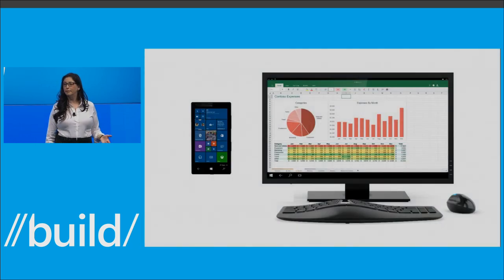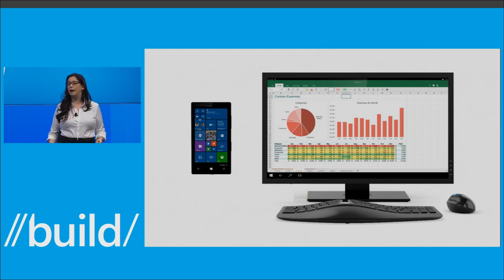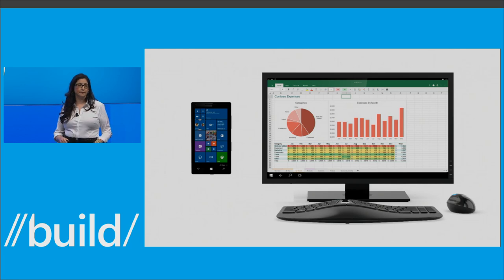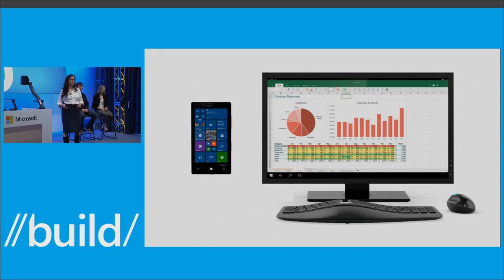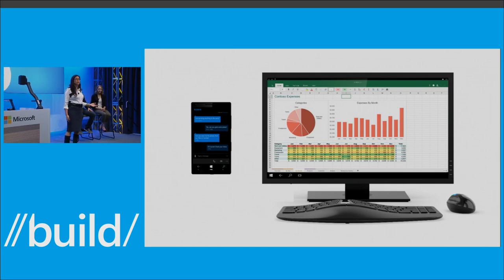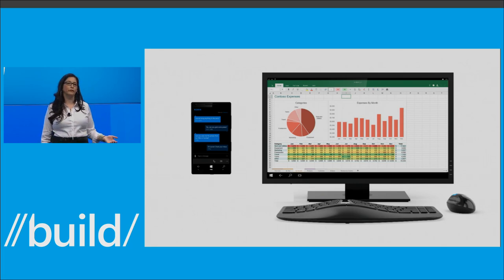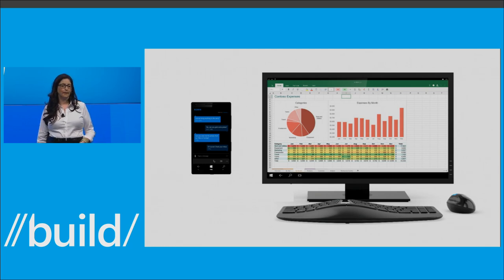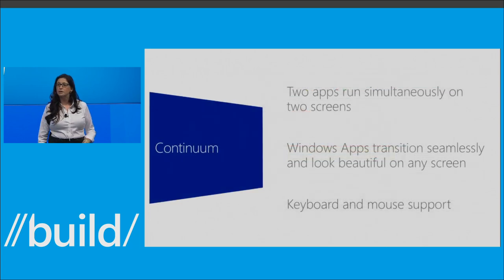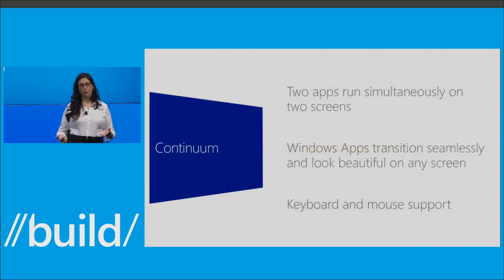You can imagine walking into a dorm or home office and docking your Windows phone to a display, a keyboard, and a mouse. What you see here is not a PC — the phone is powering both of these screens. Excel here is a Windows app scaling to the screen size and showing its adaptive layout. The phone can continue to be a phone, so even when using Excel on the big screen, you can still use your phone for other applications, texts, phone calls. Continuum allows two apps — one on your phone, one on the connected screen — both powered by your phone.